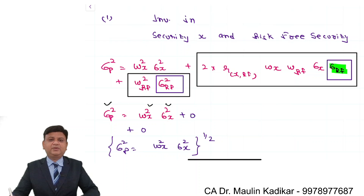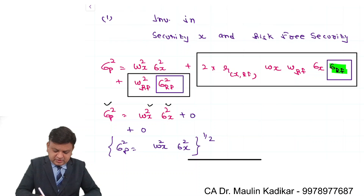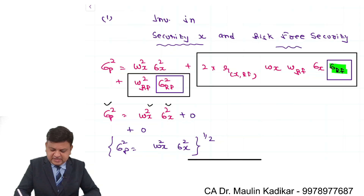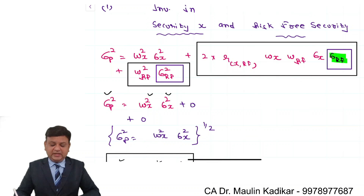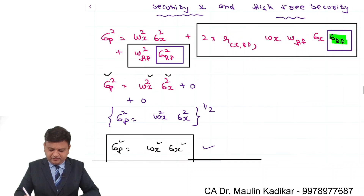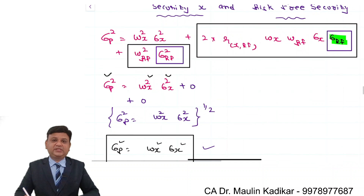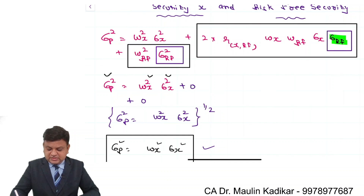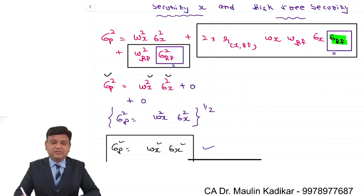As we have understood from an earlier question, if investment is made in two securities and one of them is the risk-free asset, then we compute Sigma_P using the simple formula WX × Sigma_X, because the standard deviation of the risk-free security is 0, and therefore its variance is also 0.